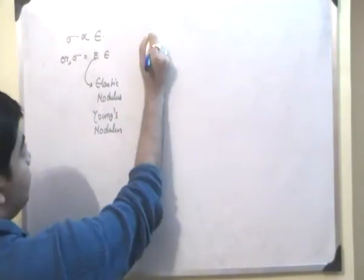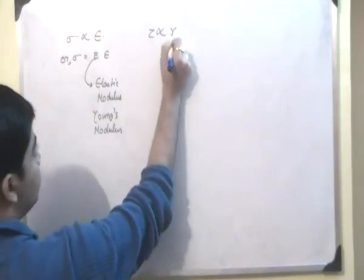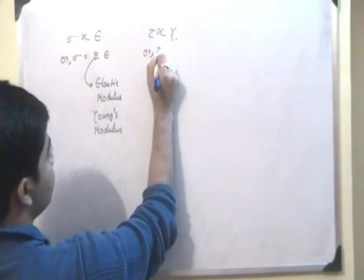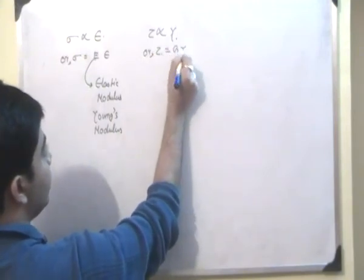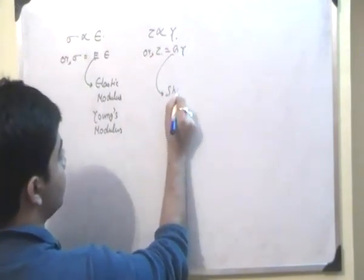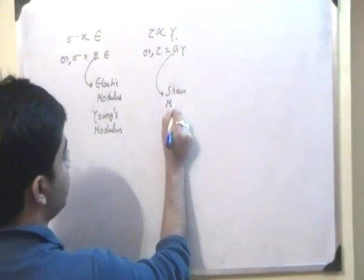Then if tau is proportional to gamma, then you have tau to be equal to G gamma, and this G is nothing but called the shear modulus.